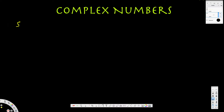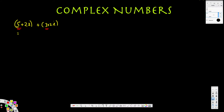Let's say we have a complex number like 5 plus 2i, and we are going to add it with another complex number, 3 plus 2i. What we have to do is simply add like terms — real number with real number, imaginary with imaginary. So 5 plus 3 gives us 8, and 2i plus 2i gives us 4i.